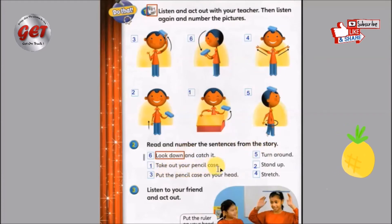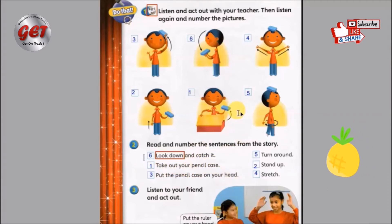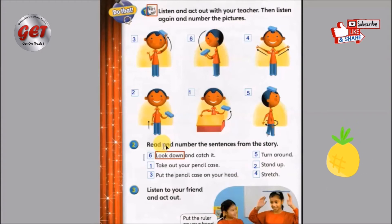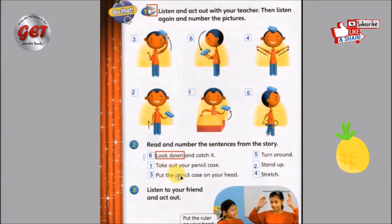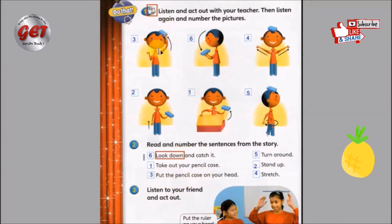这些号码呢是代表了我们的动作的先后，好不好？First, take out your pencil case. 首先，把笔盒拿出来。Secondly, stand up. 接着，站起来。Third, put the pencil case on your head. 第三，把笔盒放在头上。